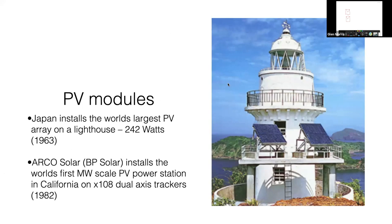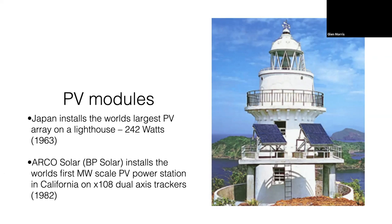Moving forward to Japan in 1963, the biggest solar PV system in the world was a mere 242 watts — not kilowatts. That's not even a standard panel size these days. We saw solar becoming cost-effective even at millions of dollars per kilowatt, because when you compare the cost of running a lighthouse on a diesel generator with someone there all the time to maintain it and fuel deliveries, solar actually became cost-effective in those early days.